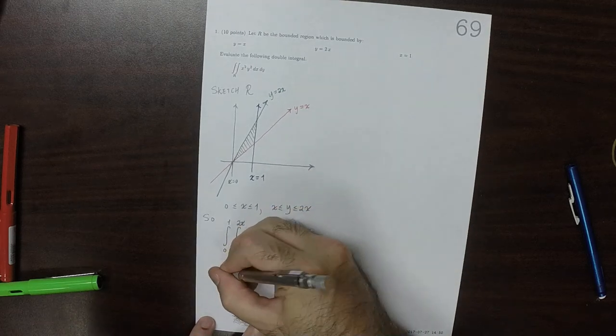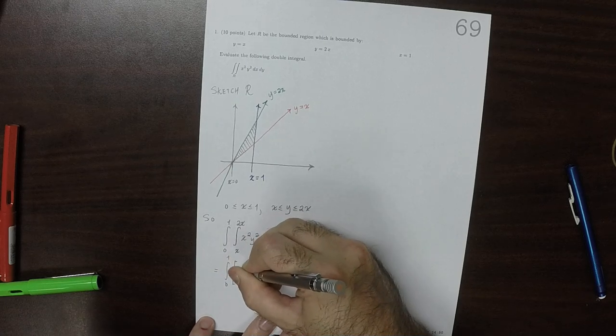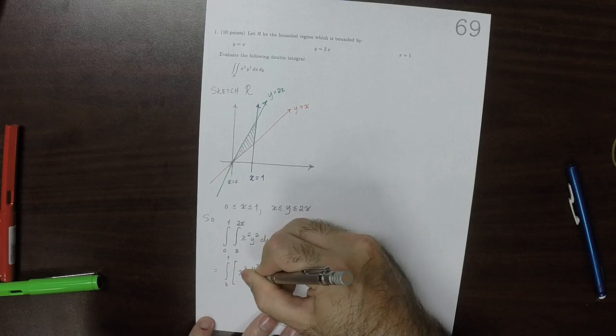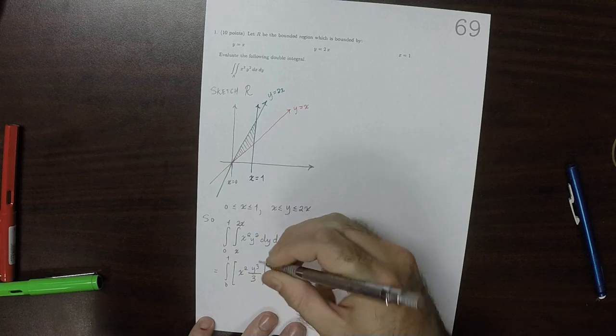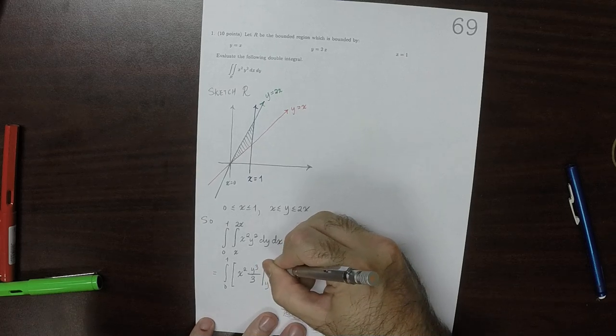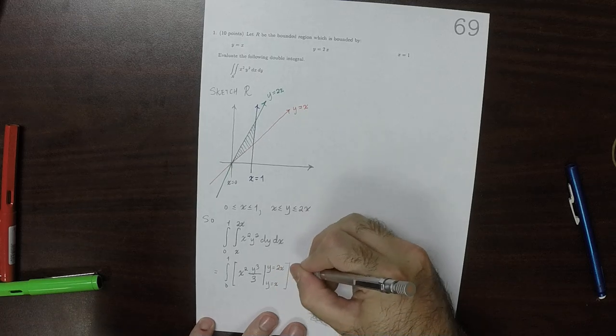Which is integral from 0 to 1, X squared times Y cubed over 3, evaluated from Y equals X to Y equals 2X, dX.